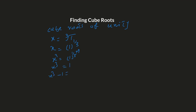We can write X cubed minus one equals zero, which is X cubed minus one cubed equals zero. This is the form a cubed minus b cubed. Using the algebraic formula a minus b times a squared plus ab plus b squared, we factor it as X minus one times X squared plus X plus one equals zero.